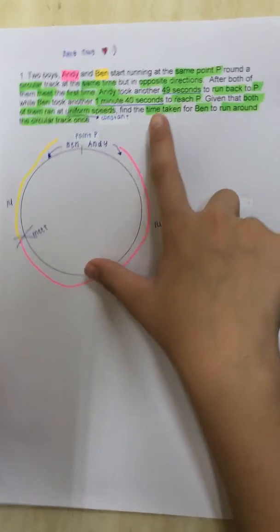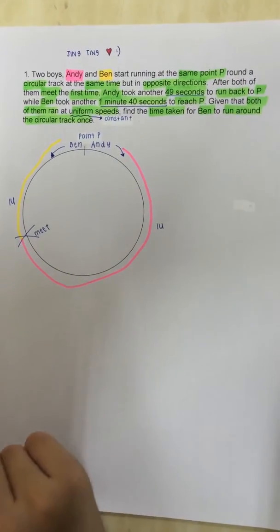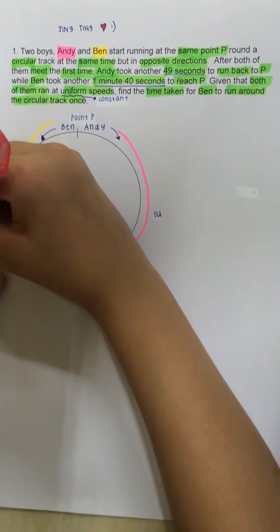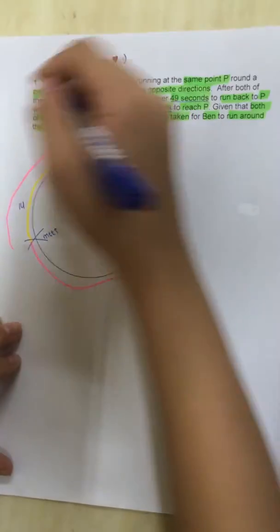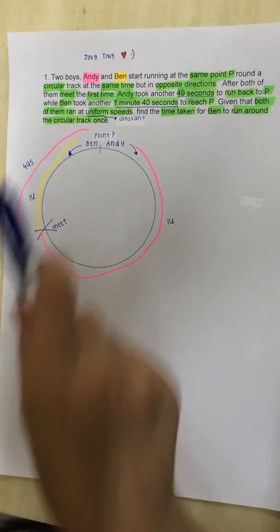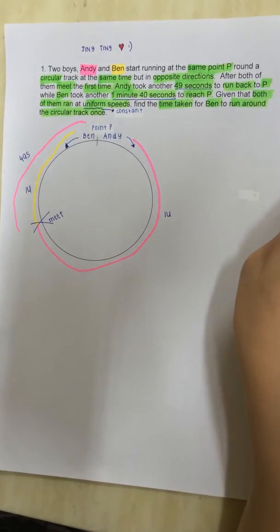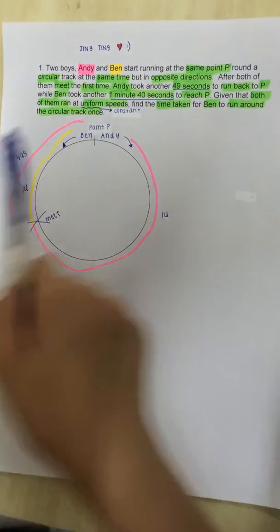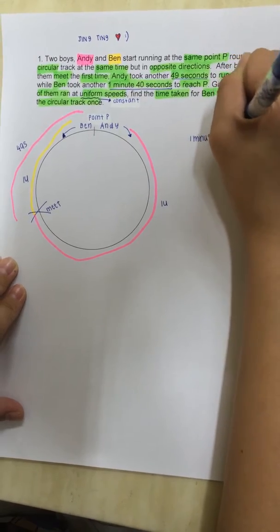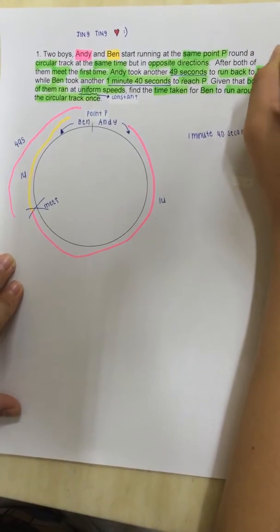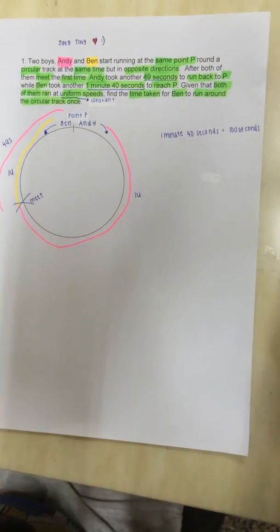Then, the next part of the question is, Andy took another 49 seconds to run back to P. That means Andy continued running after the meeting point and ran to point P back again. And, it took 49 seconds. Well, for Ben, it took another 1 minute and 40 seconds to reach P. Well, since our unit now is seconds, why won't we change 1 minute, 40 seconds, to 100 seconds? As 1 minute is 60 seconds. So, 60 plus 40 is 100.